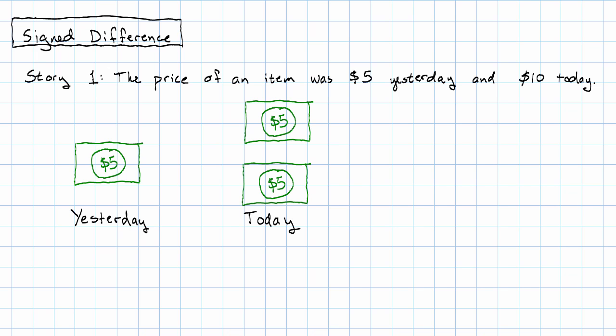So that means if I want to buy it yesterday, I could buy it with one $5 bill. And today, if I want to buy it, I would have to pay two $5 bills. What has the change been? How much has the price changed? Well, the price has changed by one $5 bill. The price has changed by $5.